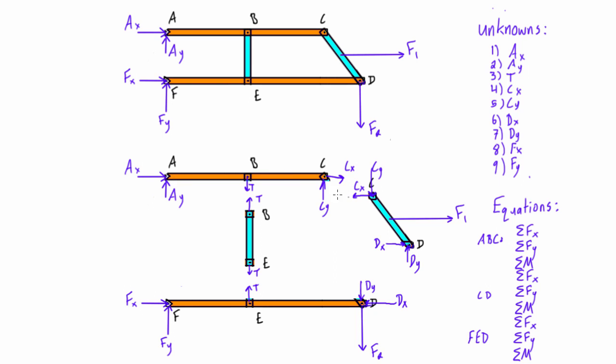So for the member ABC, member CD, and member FED, the three members are independent from each other, but they're not independent compared to the entire free body diagram of the entire structure.